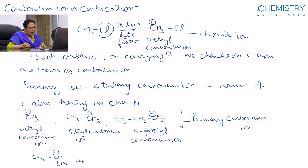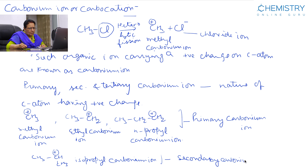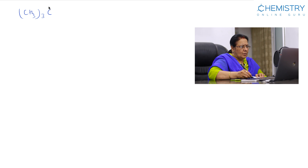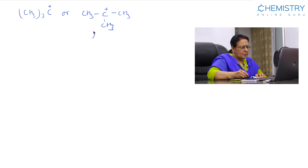The isopropyl carbonium ion is a secondary carbonium ion. The tertiary butyl carbonium ion is a tertiary carbonium ion.